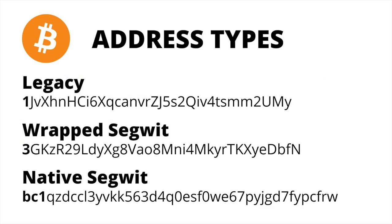Bitcoin wallets currently use three different address types, and depending on which ones you utilize, you can save on fees. Legacy addresses starting with a 1 will be the most expensive. Wrapped Segwit starting with a 3 will be a middle ground, and native Segwit starting with BC1 will save you the most on fees when you go to spend out.